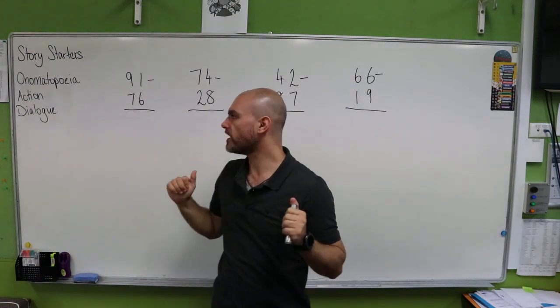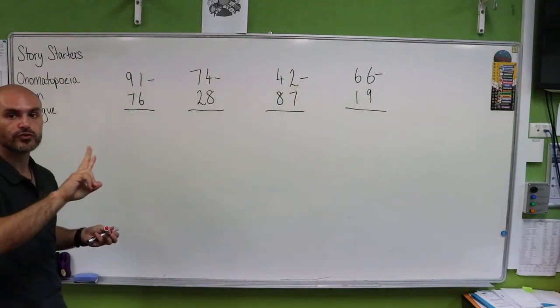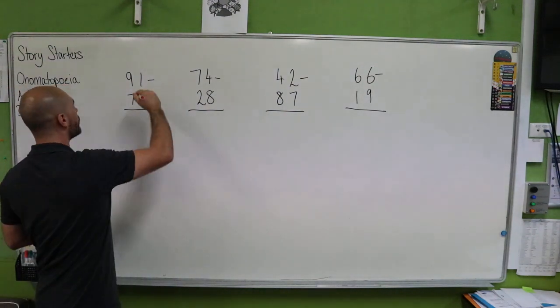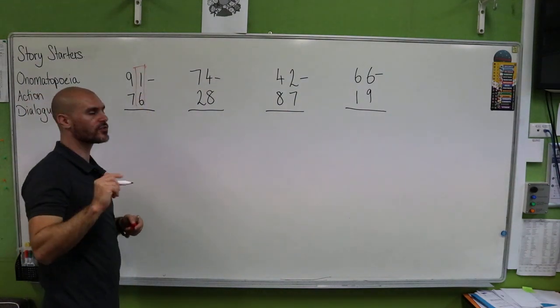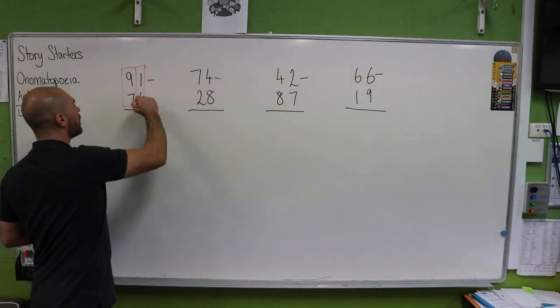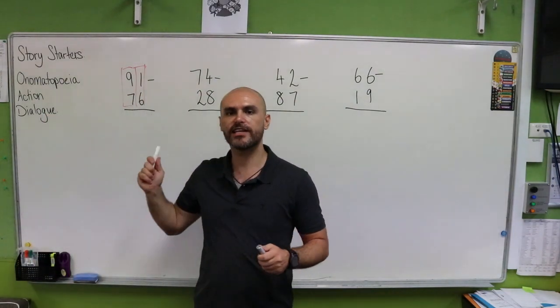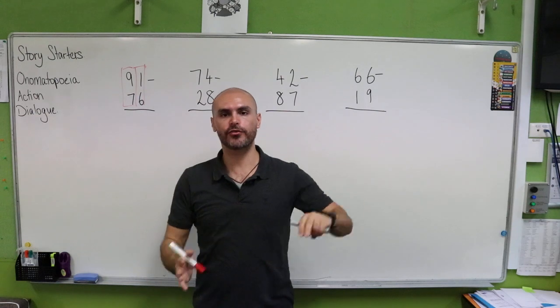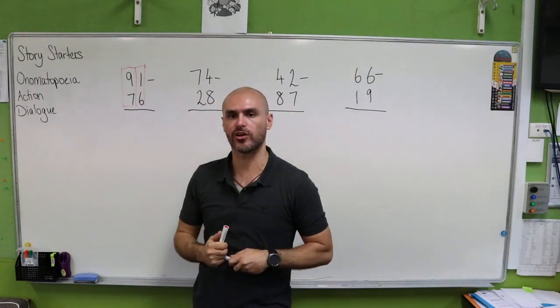With the numbers that we're looking at we are focusing on two-digit numbers. We have our units or our ones column and our tens column. With numbers like this we're always going to be borrowing from our tens column and moving them into our units column or our ones column.